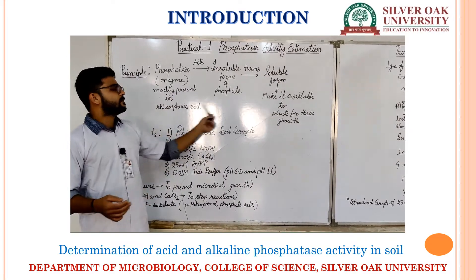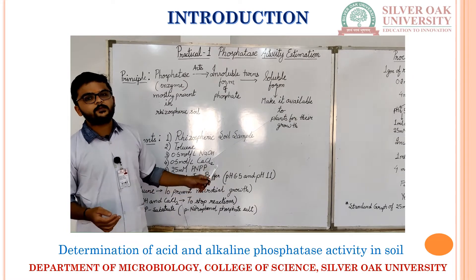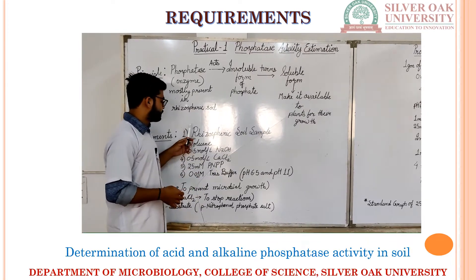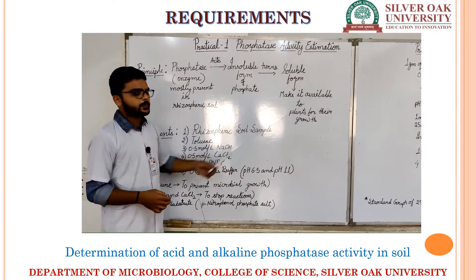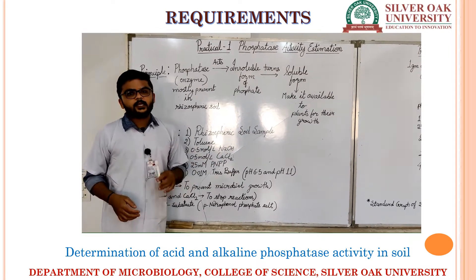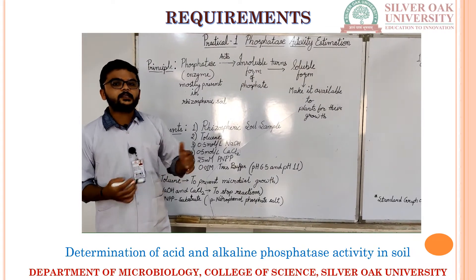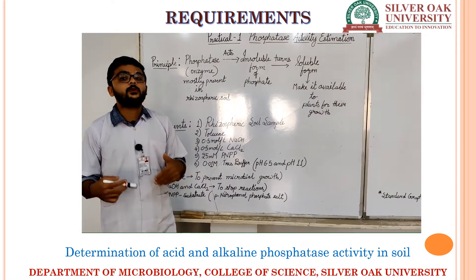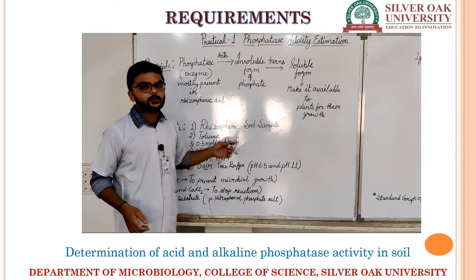The basic principle is the enzyme reaction and how we measure the phosphatase activity in the soil. For the chemicals required: toluene is used to inhibit the microbial activity or growth of any kind in the soil. Since we are taking soil as a sample, there are naturally microbes present and we do not want their interference in our experiment. So we inhibit their growth by using toluene.